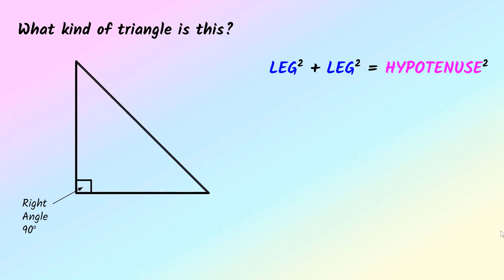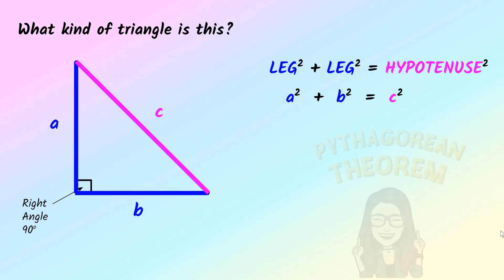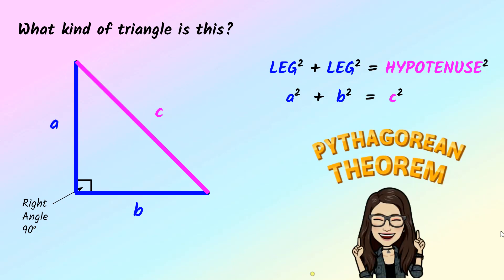So let's use algebraic terms to create the formula. I will call one of the legs A, the other leg is B, and the hypotenuse is always C. The relationship between A, B, and C is A squared plus B squared equals C squared — known as the Pythagorean theorem. This only works with right triangles.